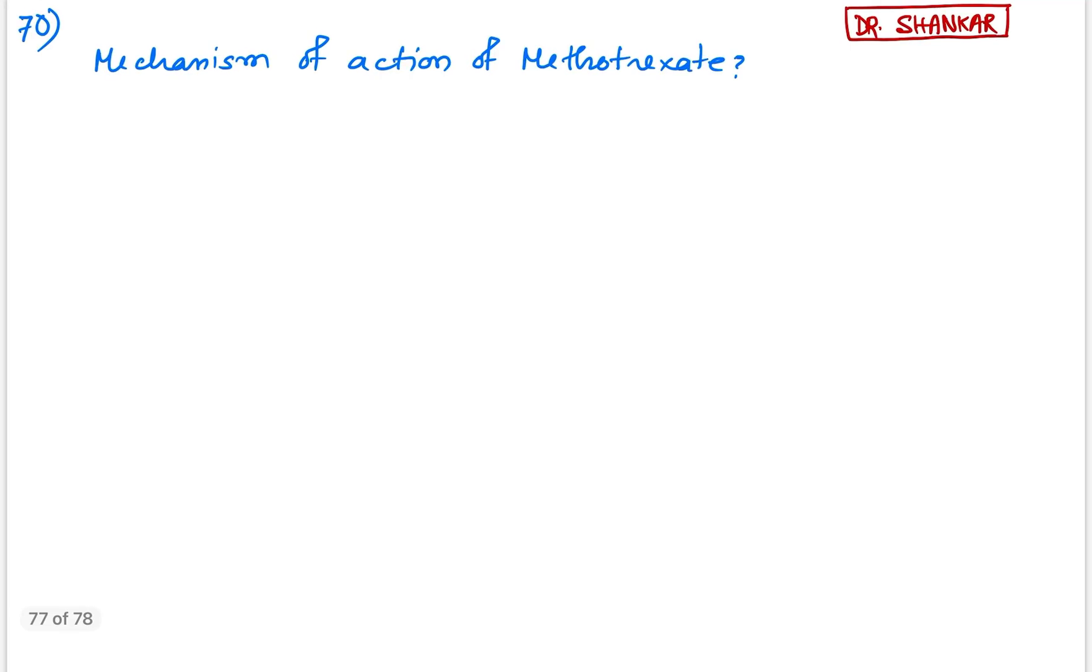Next question number 70. Mechanism of action of methotrexate. This question was simple, straightforward. The answer will be methotrexate competitively blocks which enzyme? Yes, the enzyme is dihydrofolate reductase. So the answer will be it competitively blocks dihydrofolate reductase. So this is the answer of this question.